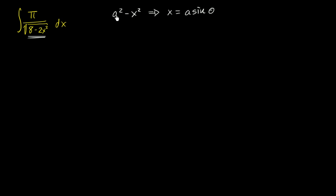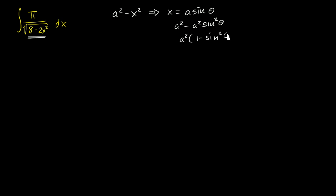Because if you do that, then this will become a squared minus a squared sine theta. And if you factor out the a squared — this is a squared — you can leverage one of the most basic trig identities: that this right over here is cosine squared theta, and maybe simplify the expression.